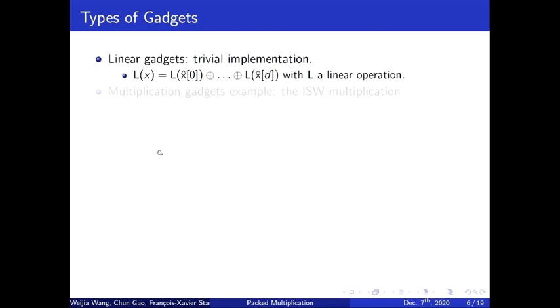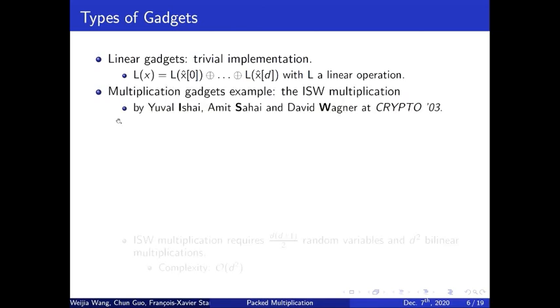So above is the basic idea of masking. As masking transforms each gate into the corresponding gadget, we are interested in the construction of different types of gadget. The first one is linear gadgets that perform a linear operation in the shared form. As the randomization is homomorphic over linear functions, linear gadgets can be correctly and securely constructed by applying linear functions on the shares of the same index, which we denote as the trivial implementation of a linear function. But it becomes more difficult for non-linear gadgets implementing non-linear functions such as multiplication.